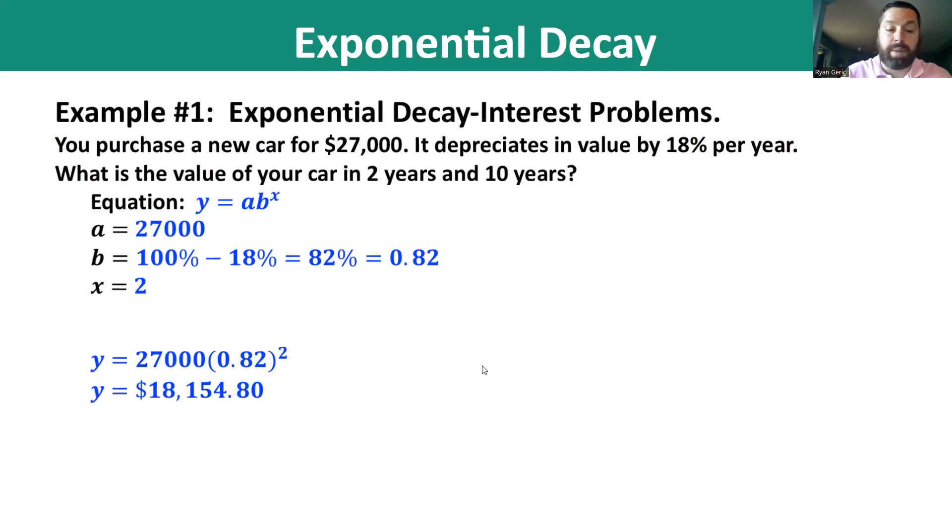All right. What happens in 10 years? The exponent changes from 2 to 10, and you get a very much smaller number, $3,711.10, is what your car would be worth 10 years after you buy it.